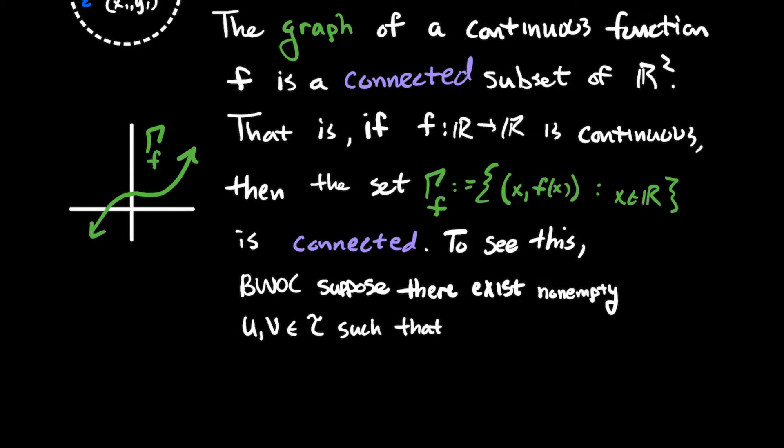So to see this though, how you might do such a problem is by way of contradiction, that's what BWOC means, suppose that there exist two non-empty open sets, so U and V are in the topology, they're open, such that U and V are disjoint. In other words, U intersect V is the empty set. And that the graph of f is the union of U with V.